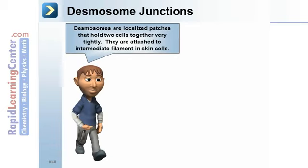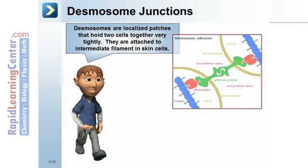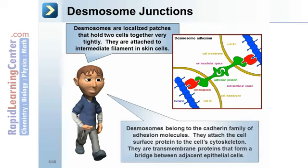Desmosomes are localized patches that hold two cells together very tightly, attached to intermediate filaments in skin cells. They belong to the cadherin family of adhesion molecules, attaching cell surface proteins to the cytoskeleton. They are transmembrane proteins that form a bridge between adjacent epithelial cells.